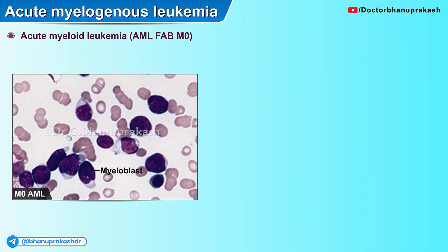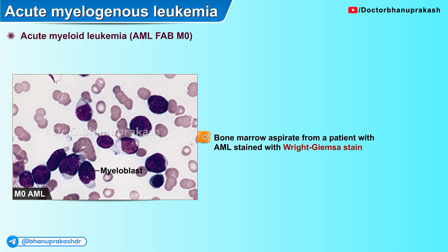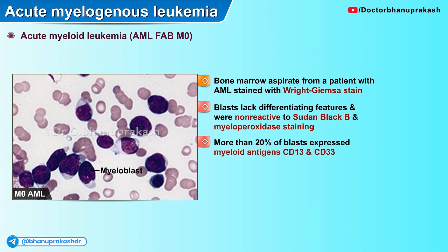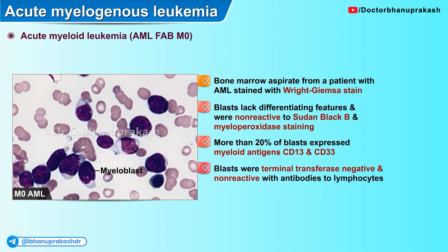Here is a histopathological slide of a bone marrow aspirate from a patient with acute myelogenous leukemia, stained with Wright-Giemsa stain. The blasts lacked differentiating features and were non-reactive to the Sudan Black B stain and myeloperoxidase staining procedures. More than 20% of the blast cells expressed myeloid antigens with CD13 and CD33 positivity. The blasts were terminal transferase negative and non-reactive with antibodies to lymphocytes. Auer rods were also not found. All of these features narrowed the diagnosis to the M0 variant of AML.